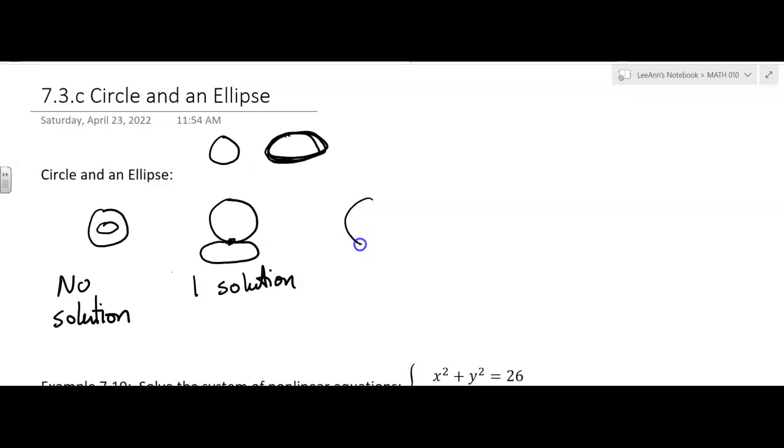You could have a circle and the ellipse can intersect like that, where it intersects in two points and we have two solutions.